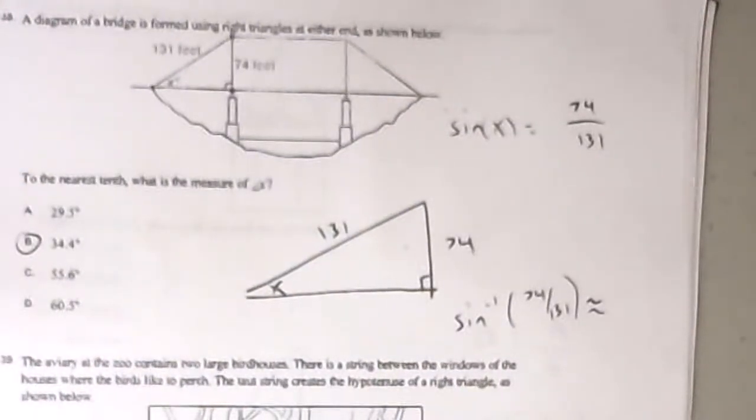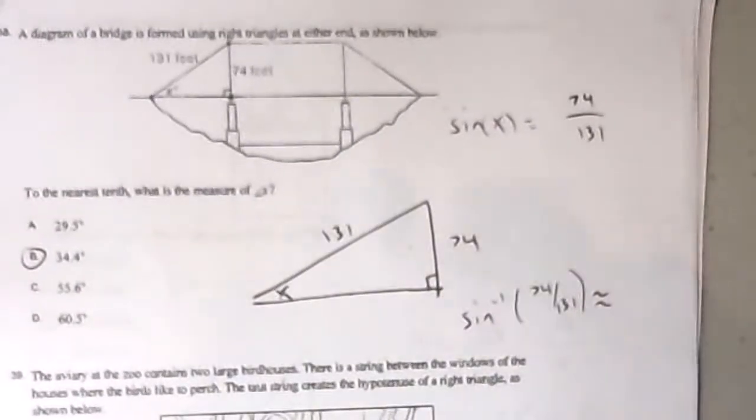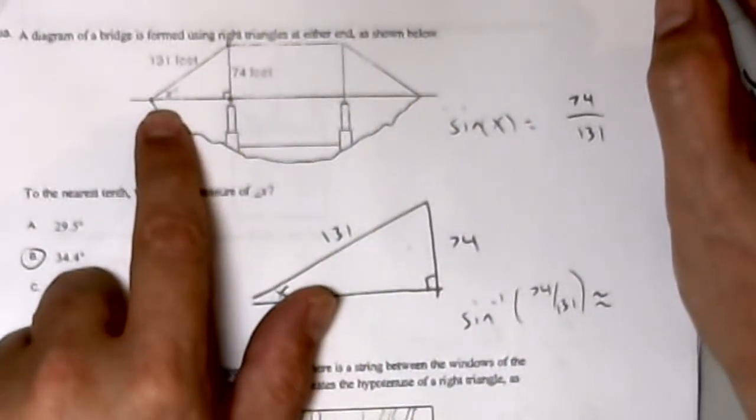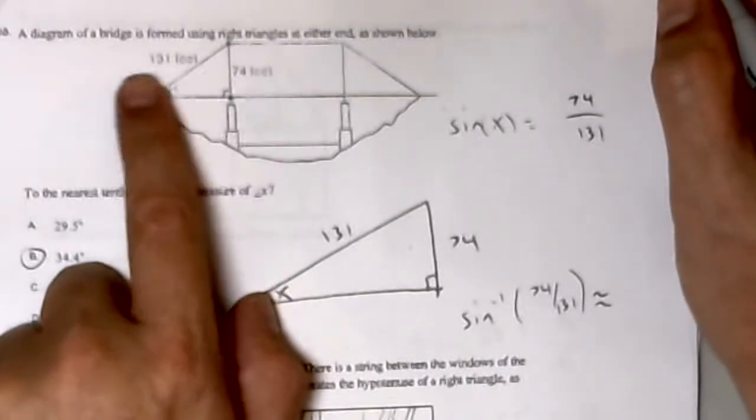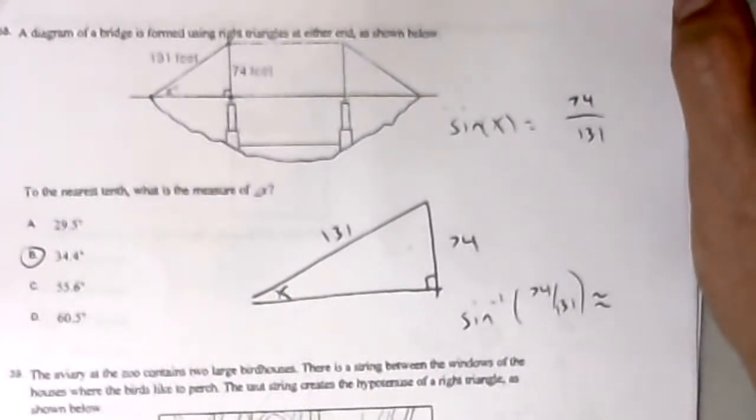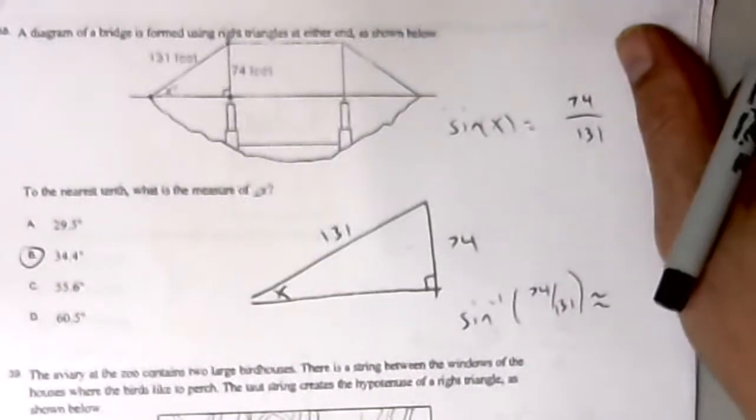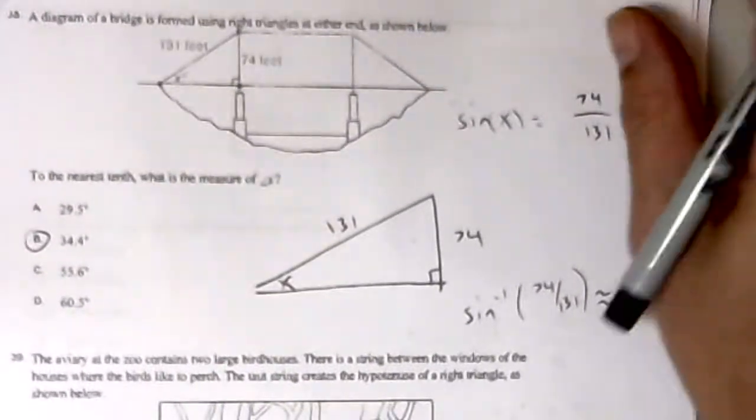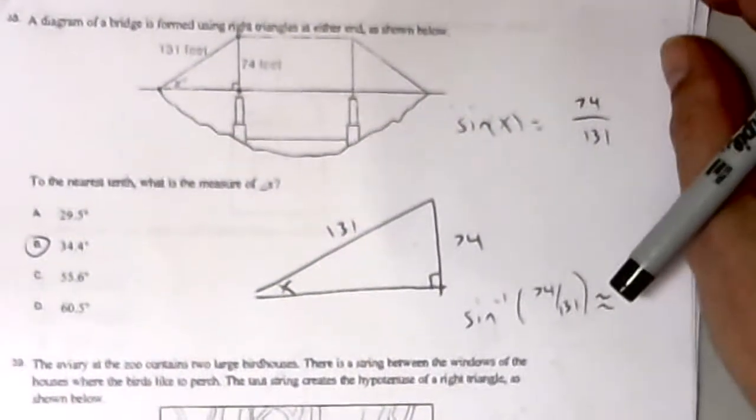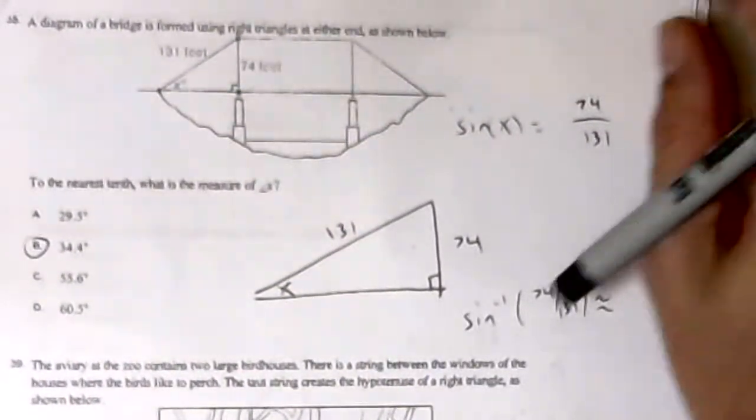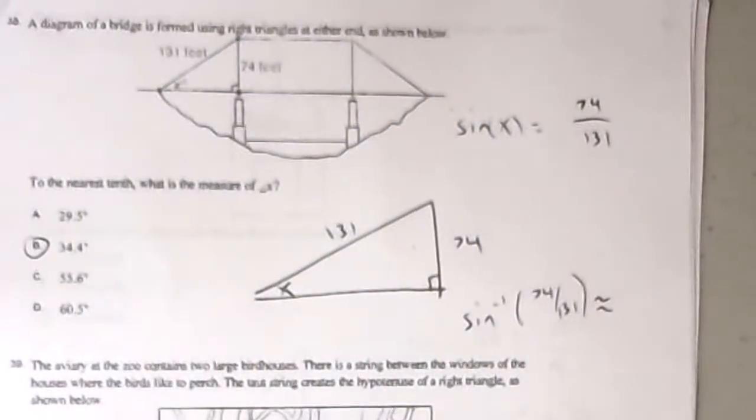You're asking, for what angle has the ratio of opposite over hypotenuse equal to 74 over 131? You're always taking the sine, cosine, or tangent of an angle. So you're saying the sine of what angle is this ratio, as opposed to what is the ratio given an angle.